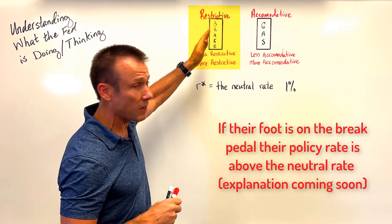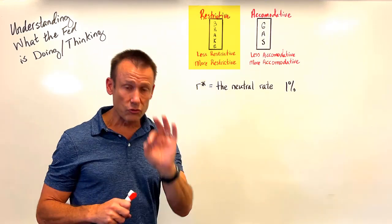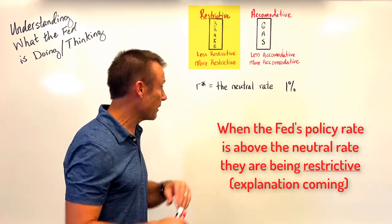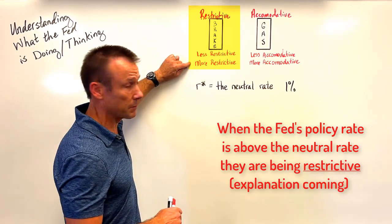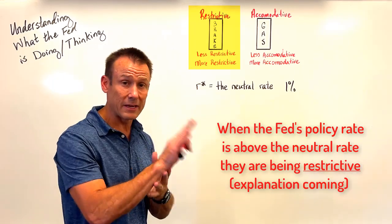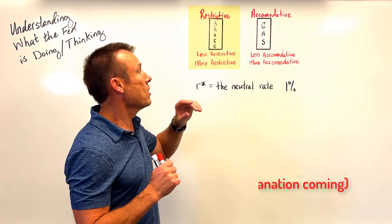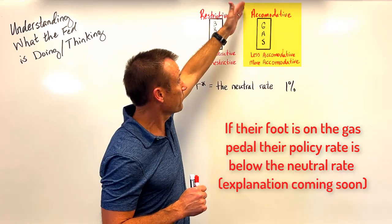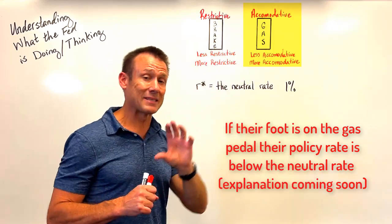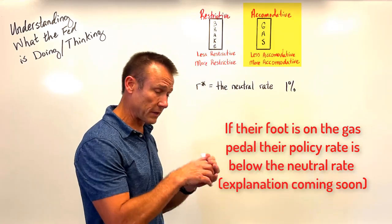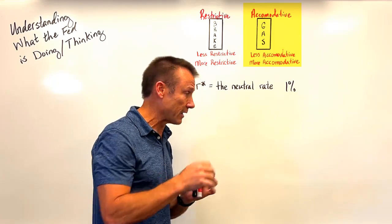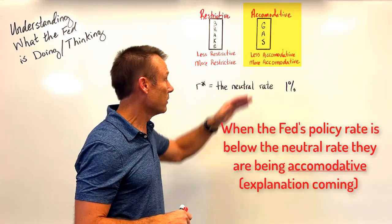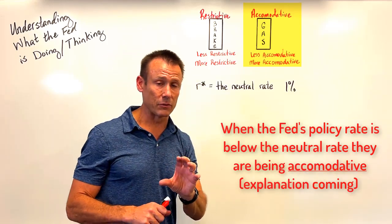If their foot is on the brake pedal, they're being restrictive — they're trying to restrain growth. If they're pressing down on that brake pedal, they're becoming more restrictive; if they're letting up, they're becoming less restrictive. Or their foot could be on the gas pedal — they're being accommodative, stimulative. They can be pushing down on the gas pedal, becoming more accommodative, or letting up on it, becoming less accommodative.